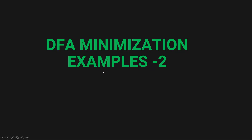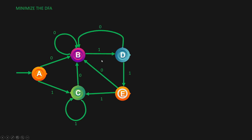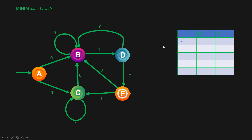Hey guys! Welcome to another theory of computation tutorial. Today we'll be looking at a second example of DFA minimization. So let's get started. This is the DFA that we are given and we have to minimize this DFA. Let's first draw the transition table for this DFA.